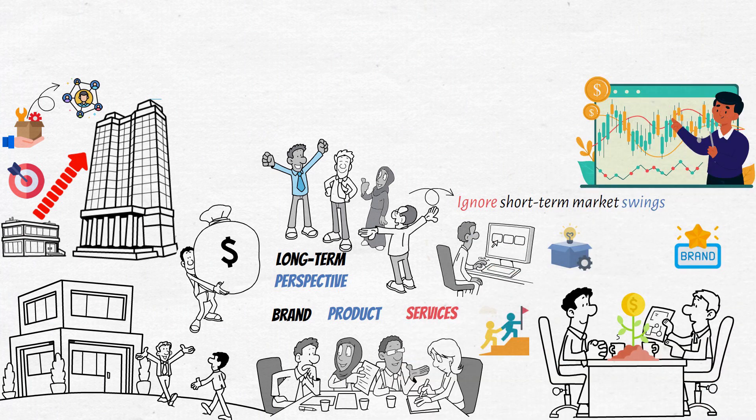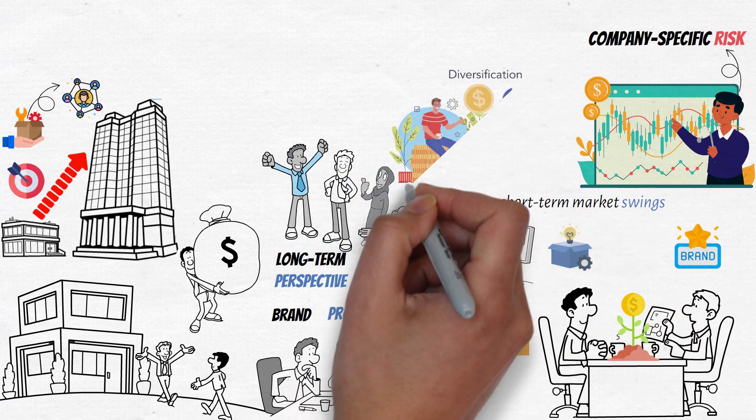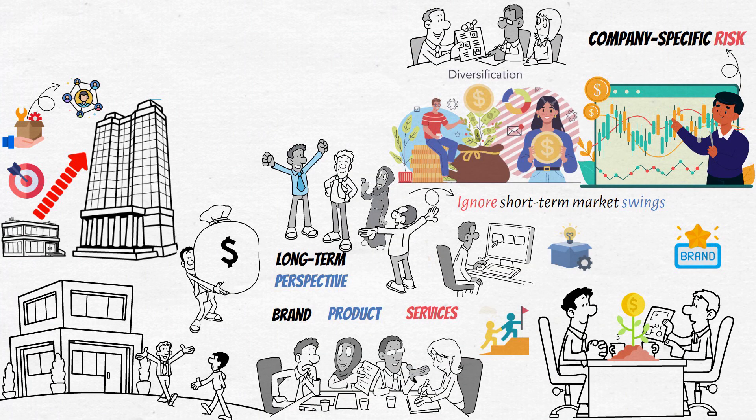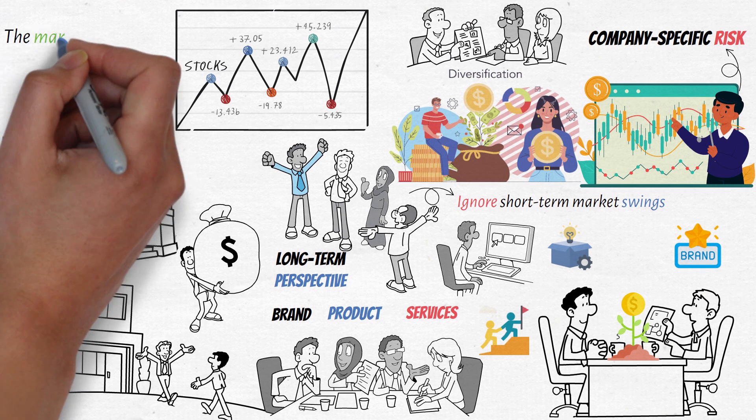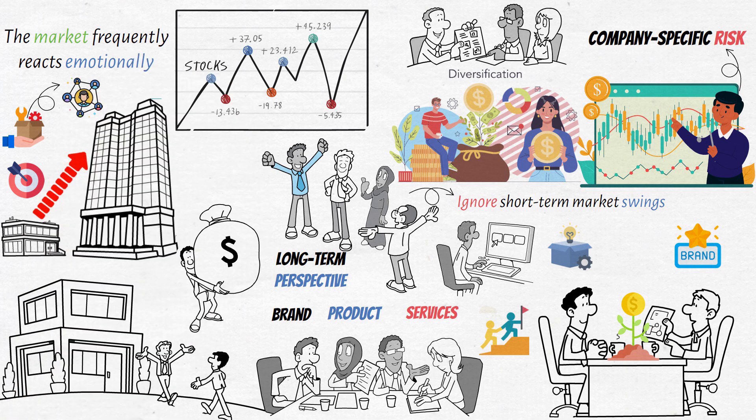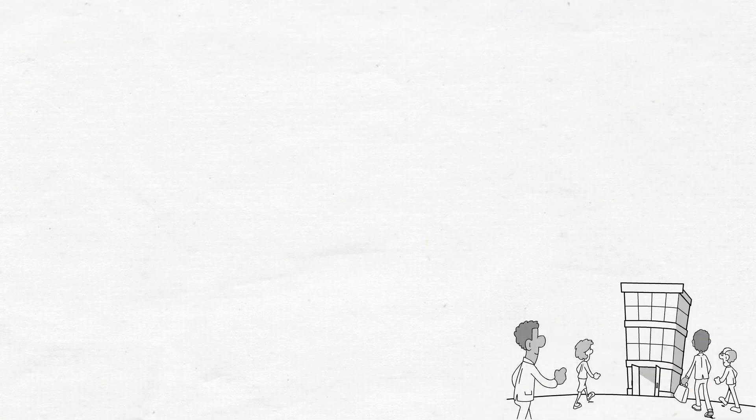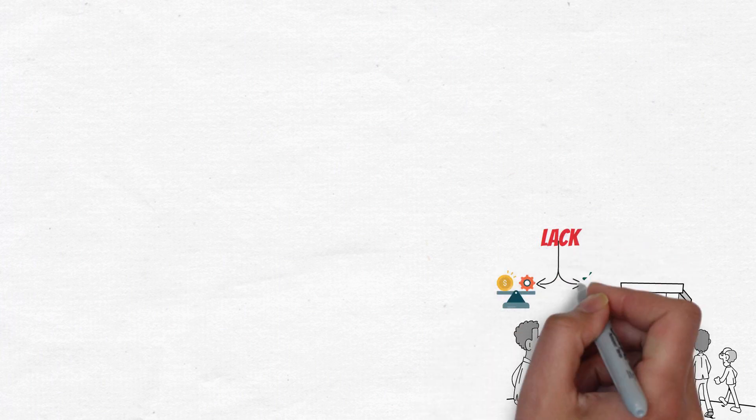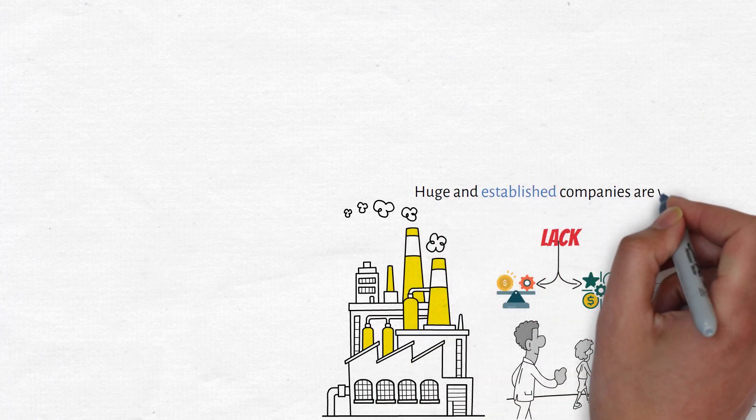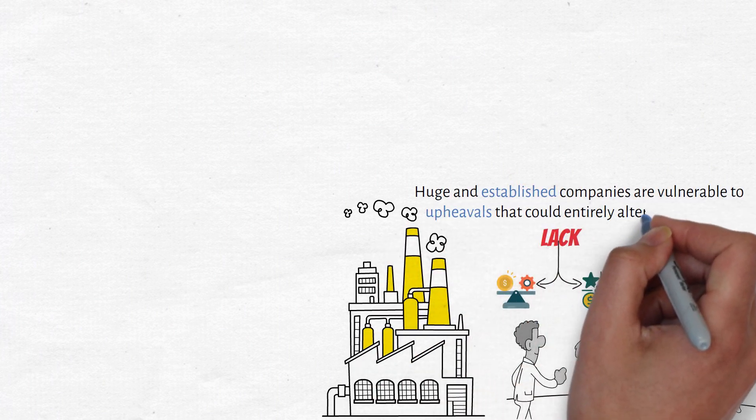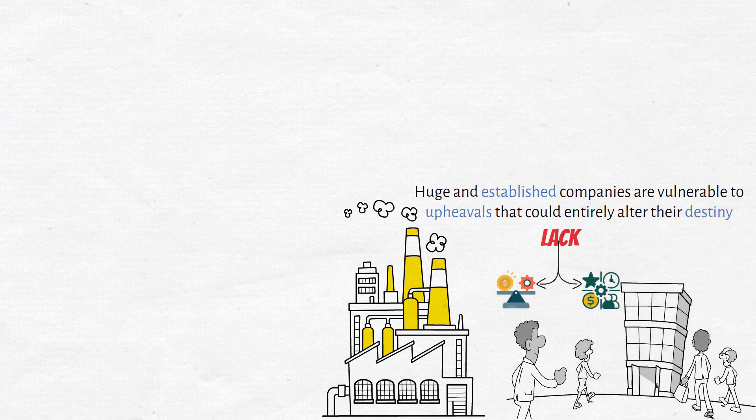Individual equities are more subject to company-specific risk than diversified investments. Market volatility and unforeseen occurrences can generate enormous price changes that may or may not be justified, as the market frequently reacts emotionally. Smaller companies and those in emerging industries are especially vulnerable because they lack the stability and resources of larger companies. Even huge and established companies are vulnerable to upheavals that could entirely alter their destiny, as evidenced by the histories of companies such as JCPenney, Blockbuster, and Toys R Us.